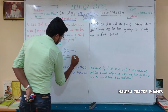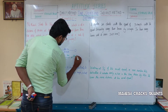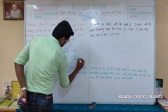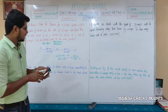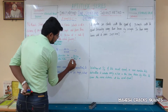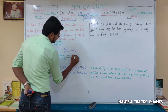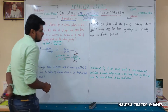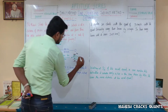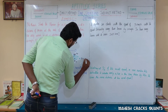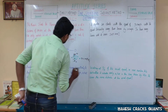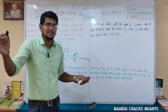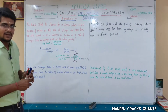Total distance is 100 plus 160 equals 260 km. Total time is 4 plus 4 equals 8 hours. So average speed is 260 divided by 8, which equals 32.5 km per hour.